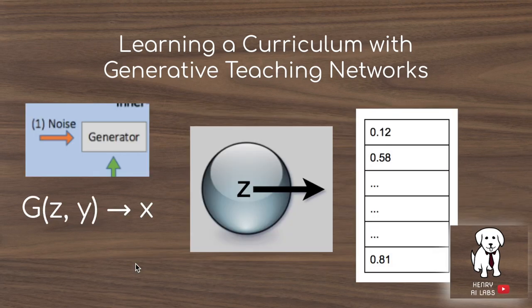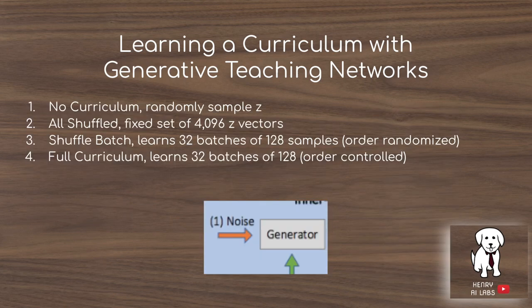The generator samples Z vectors from a predefined distribution and maps these vectors along with a class label into images X used to train the classifier. They experiment with different ways to sample Z, produce images, and control the order in which the classifier updates its parameters.